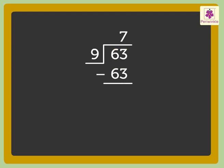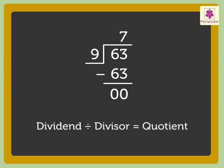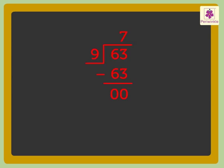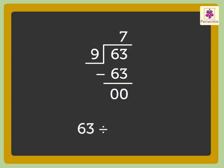The final remainder we get is 0. We know that dividend divided by divisor is equal to quotient. For this sum, 63 divided by 9 is equal to 7. So, quotient is equal to 7, and remainder is equal to 0.